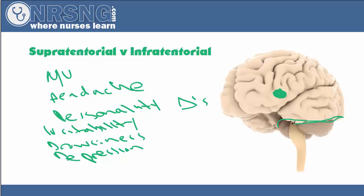There are different symptoms associated with if the tumor were to be supratentorial. Some of those would be seizures, visual changes, slurred speech, paralysis, short-term memory loss, and gait disturbance. One of the biggest complications with tumors is going to be seizures. As this tumor grows, the patient may develop seizures, so that's always something to watch out for with your patient.